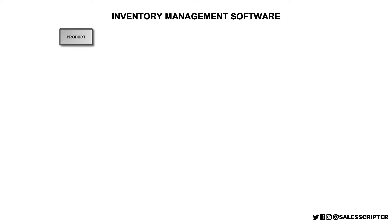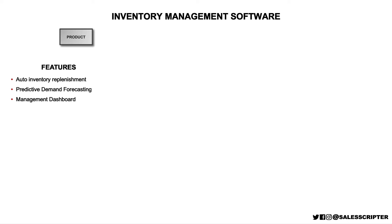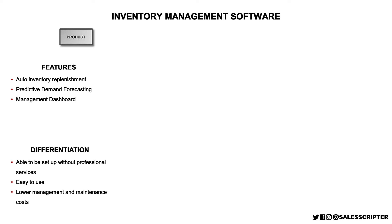The product that I'm going to use is a fictional product that I created for inventory management software. When you're thinking about what you sell, let's try to brainstorm some of the details of what it includes in terms of features. Our inventory management software includes an auto inventory replenishment feature, predictive demand forecasting, and a management dashboard. Then I recommend you think about how is the software that I sell different from the competition? Our software is able to be set up without any professional services, is easy to use, and there are lower management and maintenance costs with our product compared to the competition.